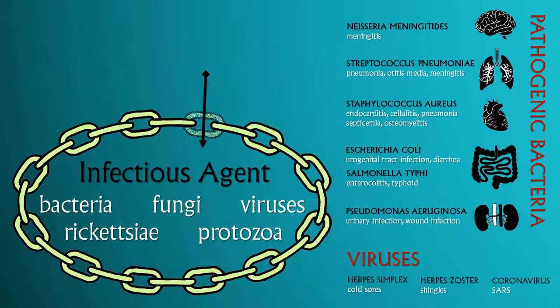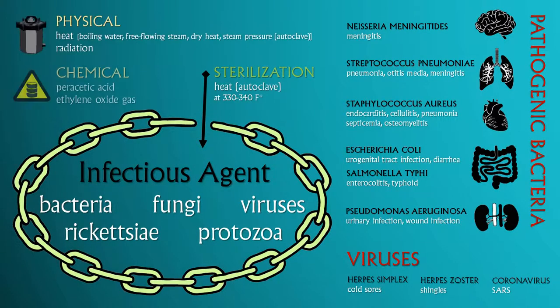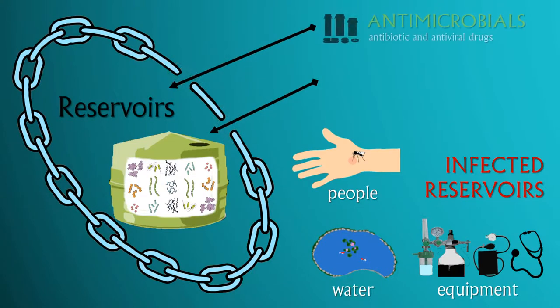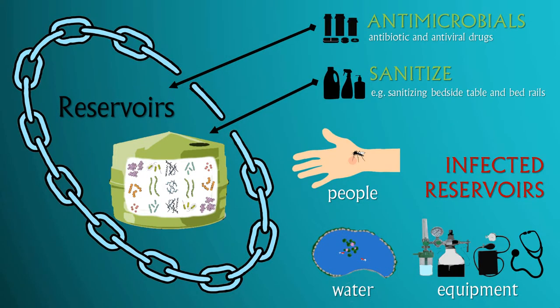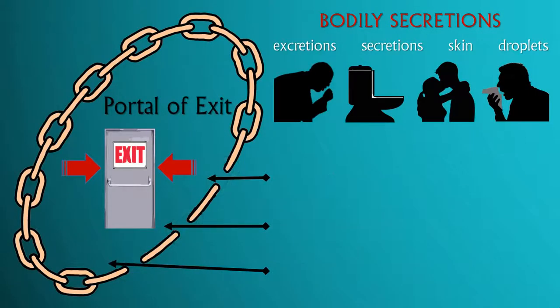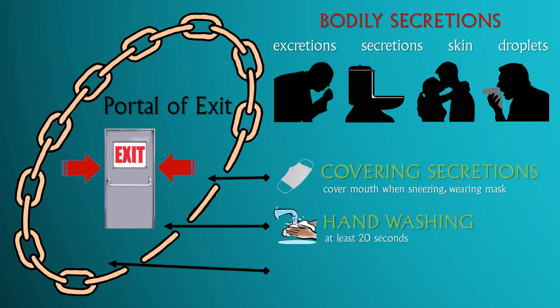The first link is infectious agents, called pathogens. The next link is reservoir — think of reservoir as a holding tank for microorganisms. The next link is portal of exit, which is how microorganisms exit the reservoir.